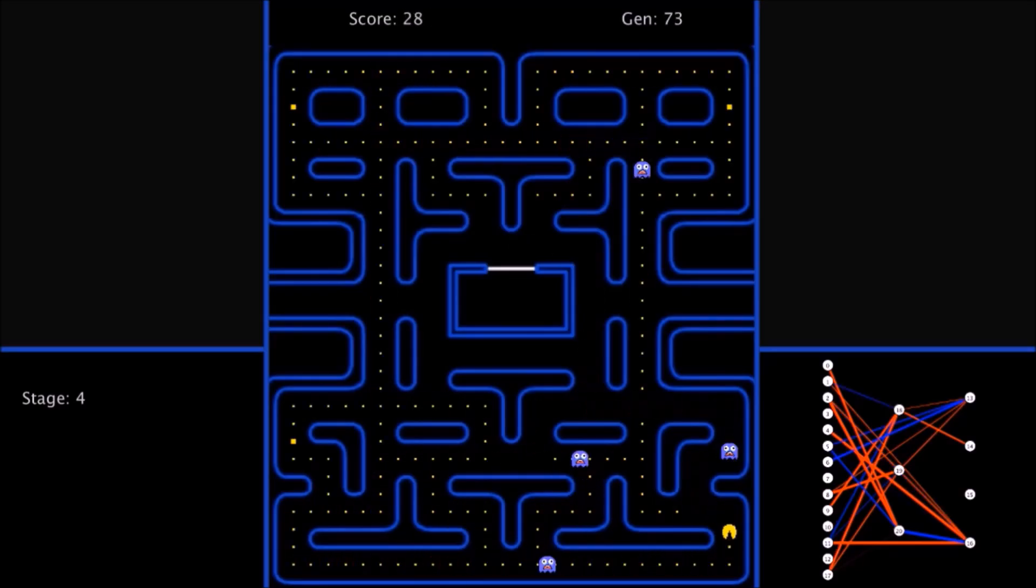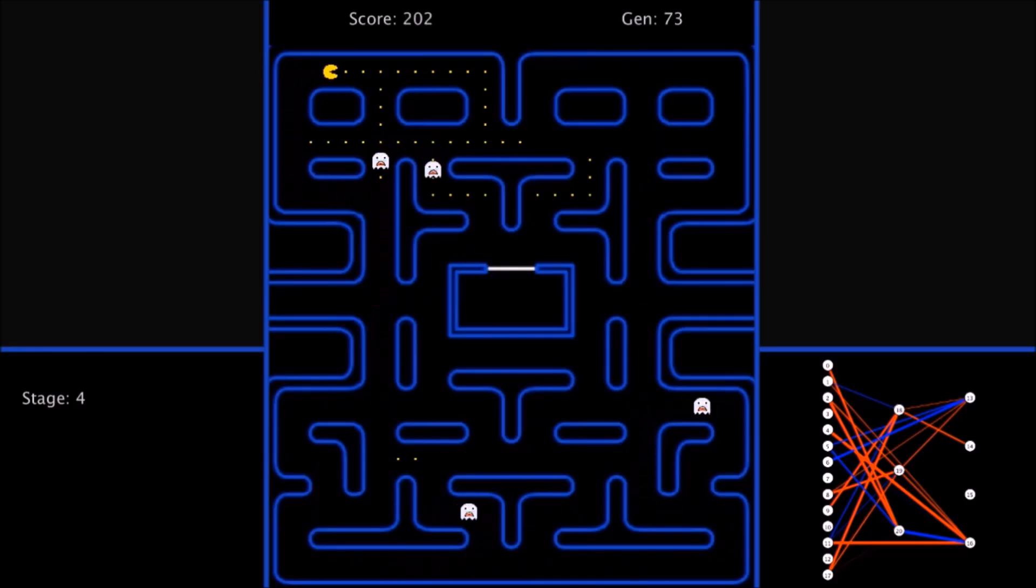Here we are, generation 73, and spoiler alert, this is the one that finally does it. Finally, after two weeks of trying and failing, of blood, sweat, and tears, finally got it to finish the game. There's no way I could make a video and have it not finish the game. It's only got four dots left—gets the bottom two, gets the top two, and then gets confused and dies.